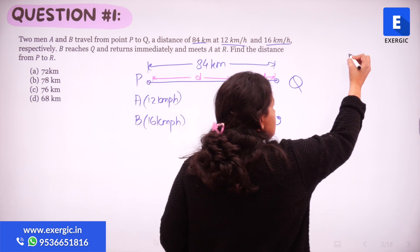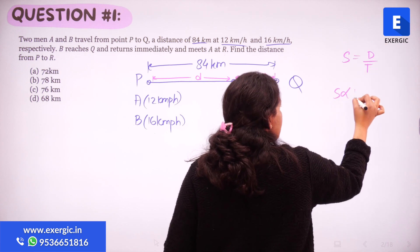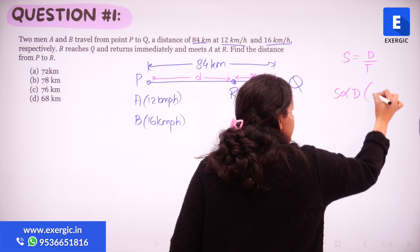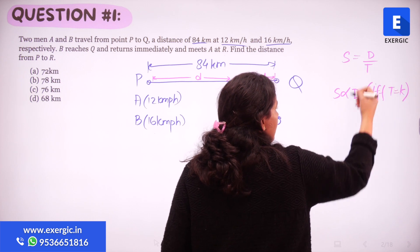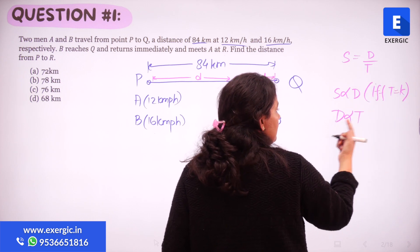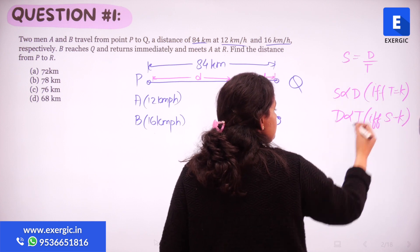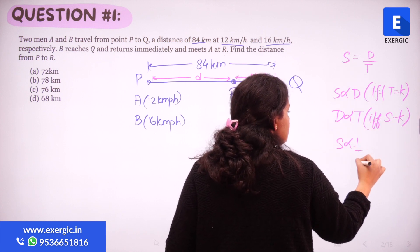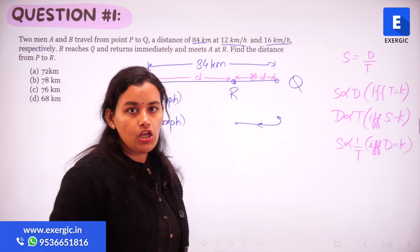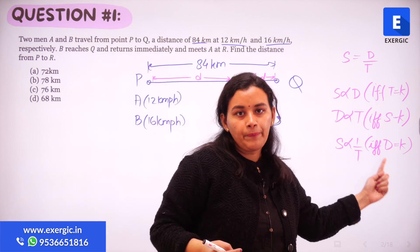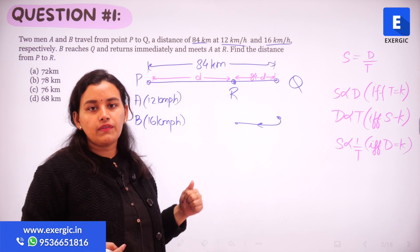Speed and distance are directly proportional if and only if time is constant. Distance and time are directly proportional if and only if speed is constant. Speed and time are inversely proportional if and only if distance is constant. If you know which term is constant, you know which proportionality to use and can proceed with the question.